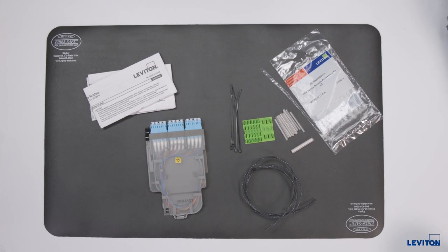The parts that come with the HDX module include the module with lid and pigtail installed, and an instruction sheet with a marking template for the fibers.